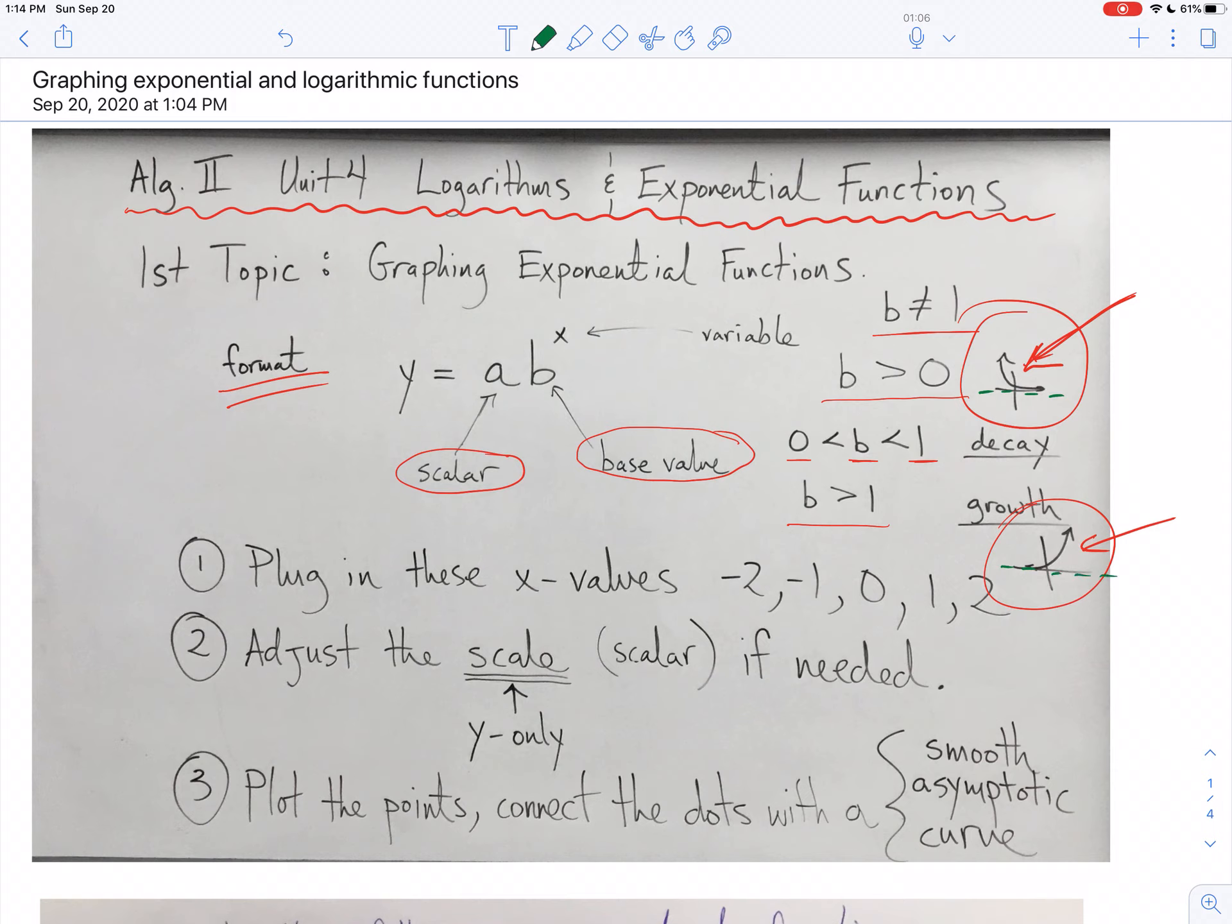But like I promised, every single time we graph an exponential function, you're going to plug in the same exact x values. Plug in these guys: negative 2, negative 1, 0, 1, and 2. And if there's a scalar out in front, adjust the scale. But you don't adjust it on the x. Your x will never change. You're always plugging in the same exact x values. The scale is only going to change on the y.